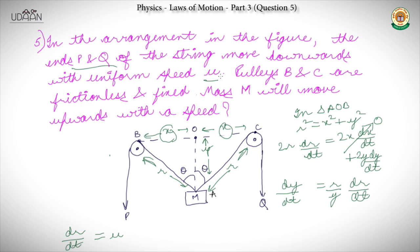Let's put U into the equation. We will have dy/dt equal to (R/Y) into U. Now, looking at triangle AOB, we have Y/R equal to cos θ.